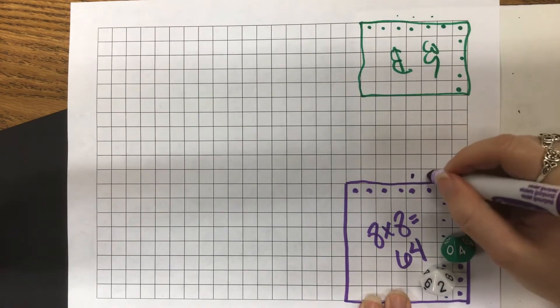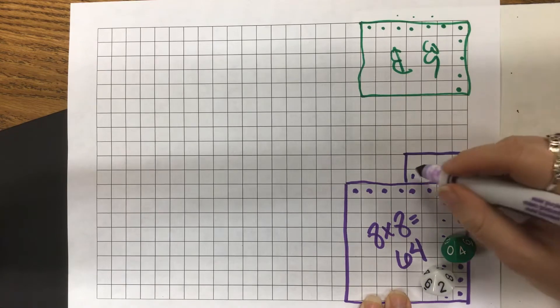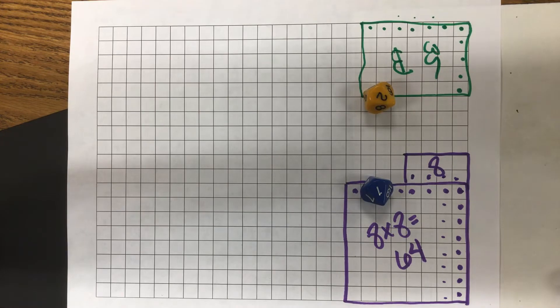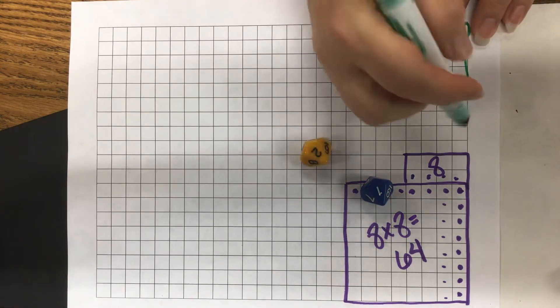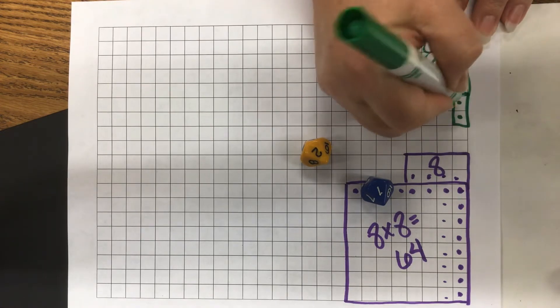So my turn now. I have two groups of four. That one's pretty easy. Two groups of four would be right here, and I know that four plus four is eight. Your turn. Oh, one times two. So one group of two.